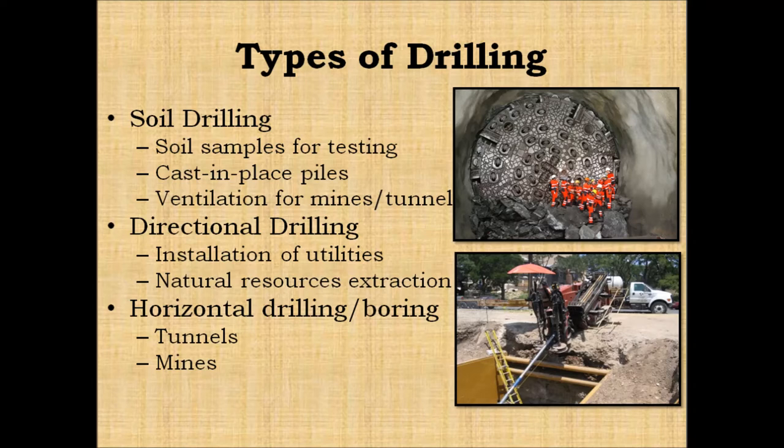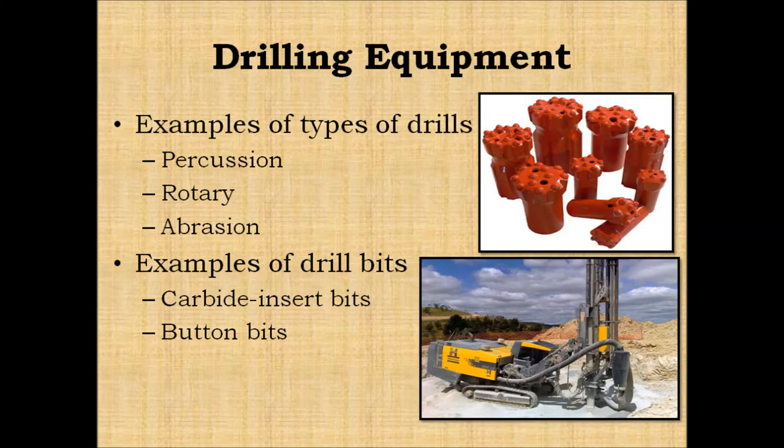Horizontal drilling and boring is always done horizontally and requires the boring machine to sit within a pit, commonly known as a boring pit. As the drill is pushed into the hole, sections of sleeves are pushed directly behind. After each section of sleeve is pushed into the bore, the ram that performs the pushing is retracted and a new sleeve section is joined to the sections already present within the bore. Three types of drills are percussion, rotary, and abrasion.